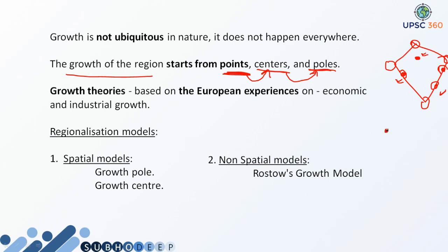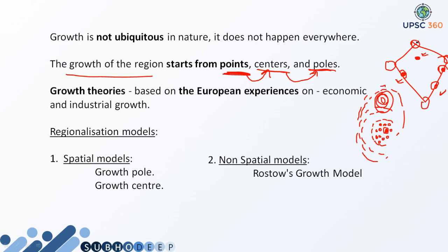When that growth point grew — that is, in and around that point, many service sectors grew and many industries were set up — then that growth point converted into a growth center. And when this growth center further evolved, or many other growth centers came together, then they resulted in the formation of growth poles. So these are the main points: what is a growth point, what is a growth center, what is a growth pole.